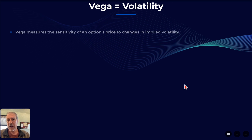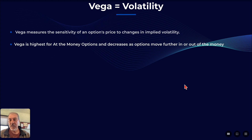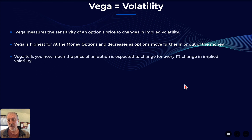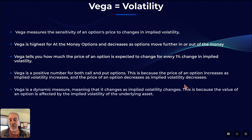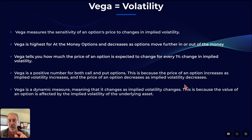Vega essentially equals volatility. Vega measures the sensitivity of an option's price to changes in implied volatility. Vega is highest for at-the-money options, and it decreases as your strike price moves further in or out of the money. Vega tells you how much the price of an option is expected to change for every 1% change in implied volatility. It's a positive number for both call and put options, because the price of an option increases as implied volatility increases, and decreases as implied volatility decreases. Vega is a dynamic measure, meaning that it changes as implied volatility changes, because the value of an option is affected by the implied volatility of the underlying asset. Remember that whole extrinsic value thing — as volatility increases, that extrinsic value gets larger; as volatility decreases, that extrinsic value decreases.